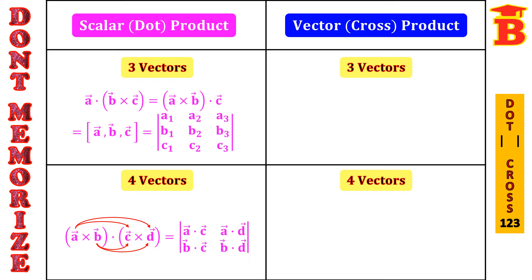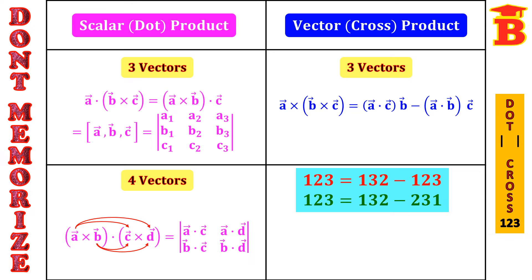Next, let us see the cross product of 3 vectors. Here A cross (B cross C) — we have both cross signs, so it is called the vector product of 3 vectors. The formula is: A·C times B minus A·B times C. We can remember this easily by the number technique: 1, 2, 3 equals 1, 3, 2 minus 1, 2, 3, where 1 is A, 2 is B, 3 is C.